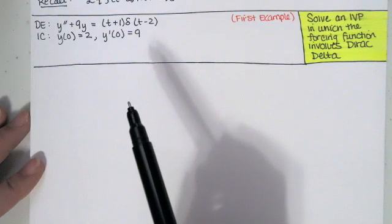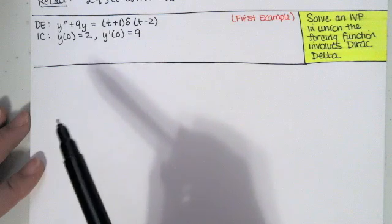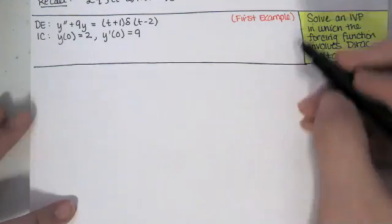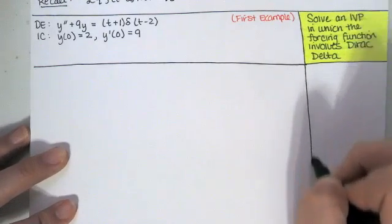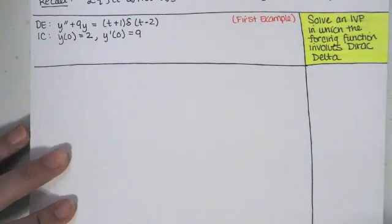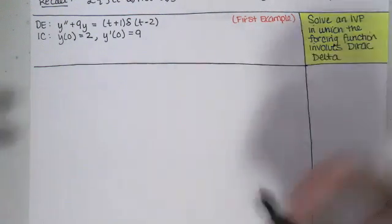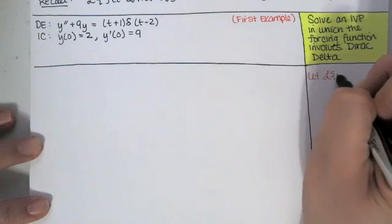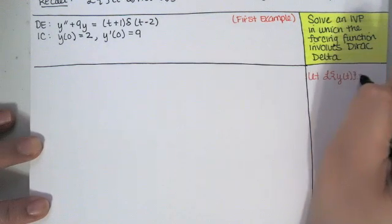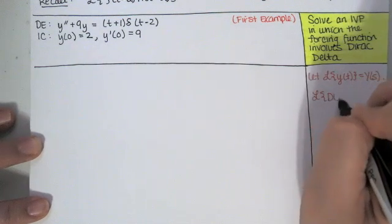We will solve the differential equation and we'll see that the solution involves a Heaviside function, as was also discussed in the last video. Let's start the way we always start, by introducing our notation. We let the Laplace transform of y(t) equal Y(s), and then we take the Laplace transform of the differential equation.